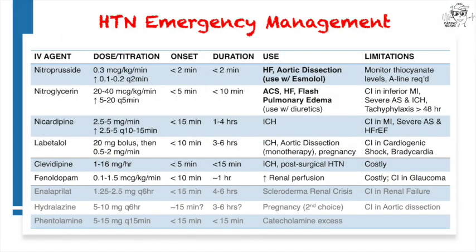In hypertensive emergency, you have a variety of agents at your disposal. The best agent will depend on the indication or the end organ affected. When using an IV drip, ideally you'll have an arterial line for precise titration and monitoring of blood pressure, but your institution may have specific rules regarding each agent, so consult accordingly. This slide looks very busy, but we can split it up into three sections, of which we'll talk about the first four — the agents that are most widely used: nitroprusside, nicardipine, nitroglycerin, and labetalol.